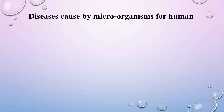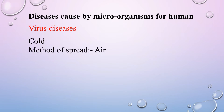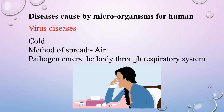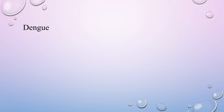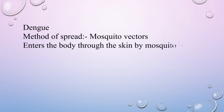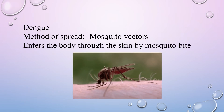We are going to discuss the first adverse effect: diseases caused by microorganisms in humans. Starting with virus diseases — the common cold is a virus disease that spreads through air and the pathogen enters the body through the respiratory system. Next, Dengue spreads through mosquito vectors and enters the body through the skin via mosquito bites.